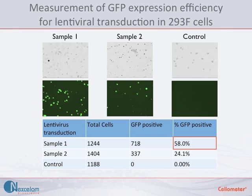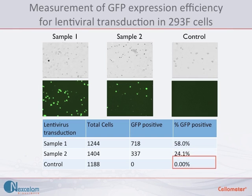When the lentiviral vector is diluted twofold, the percent of GFP positive cells decreases from 58% to 24.1%. The control sample does not contain a vector, and therefore no GFP expression was detected.